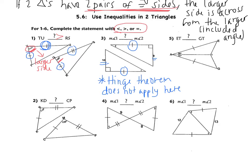Looking at example five, it says ET and GT, so I'm going to be comparing those two sides. First, I want to make sure the hinge theorem applies. I have one pair of congruent sides, and I also have AT congruent to itself by the reflexive property. Now I have 28 degrees and 31 degrees. 31 is bigger, which means TG is going to be bigger than ET.